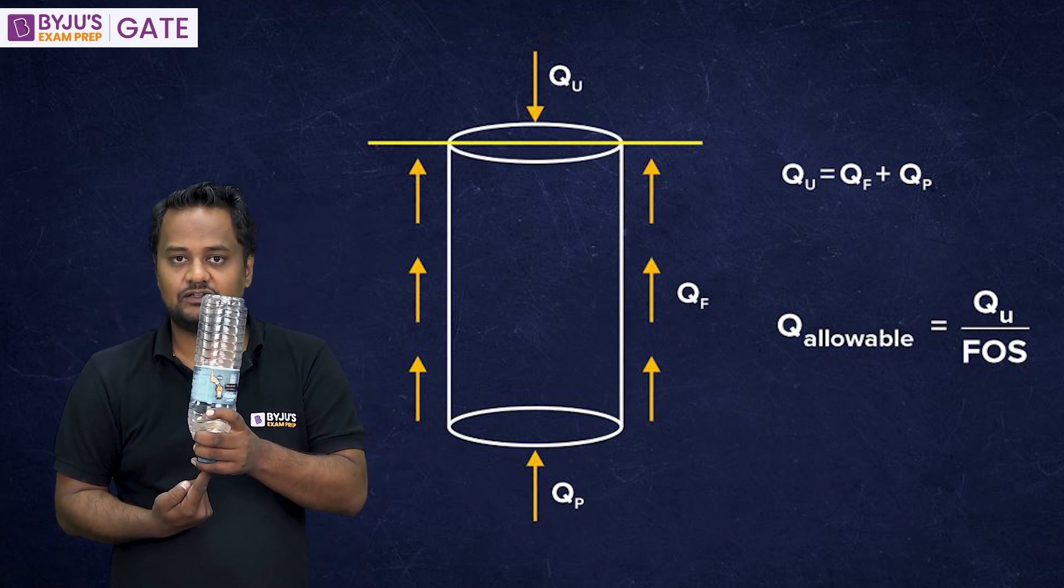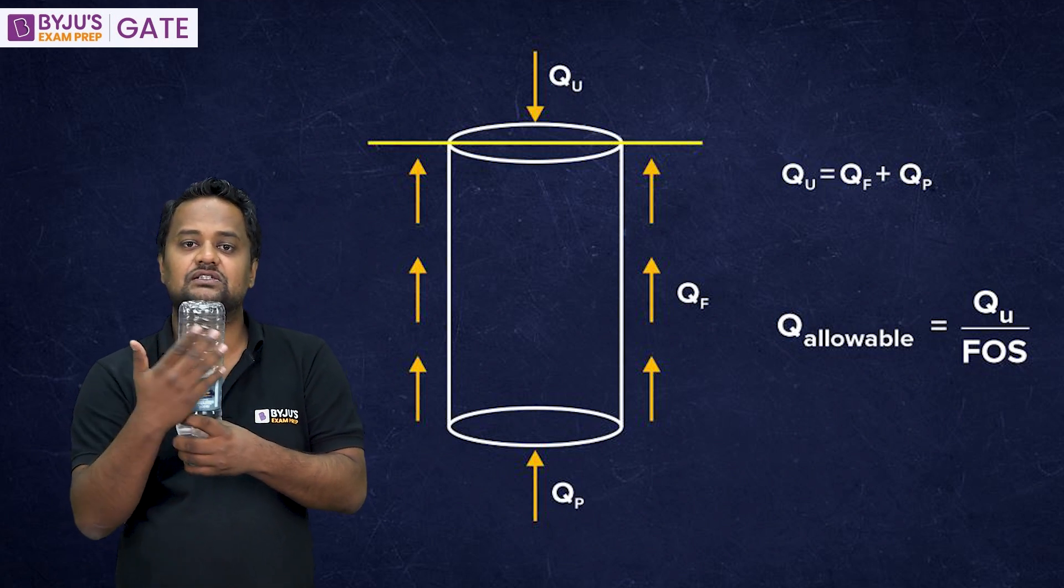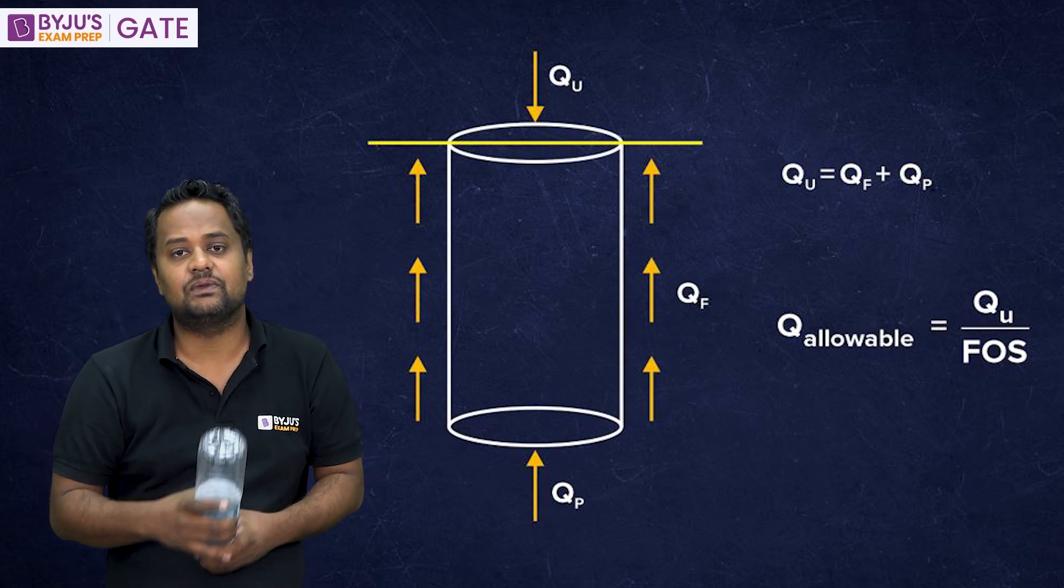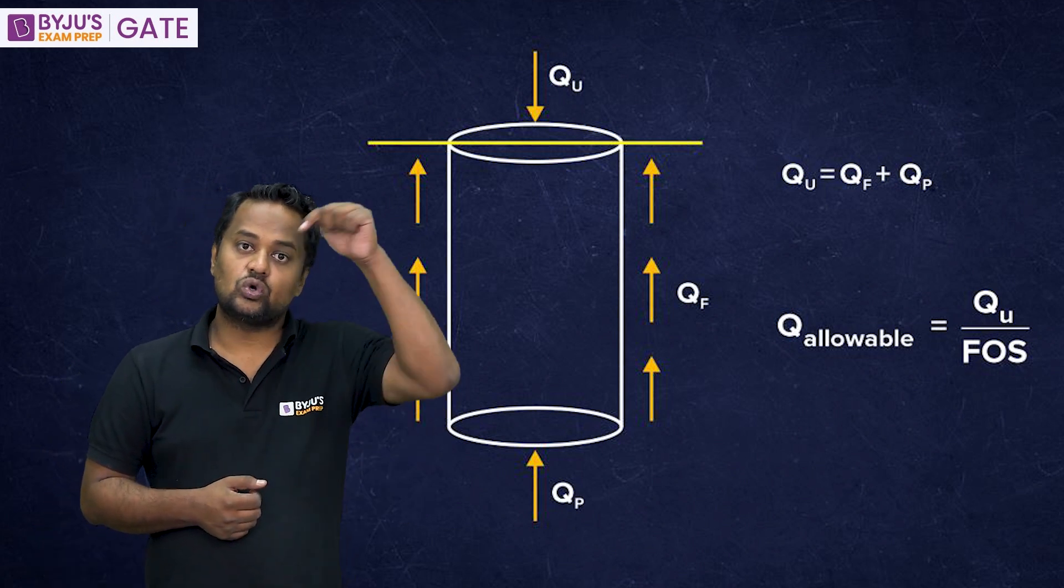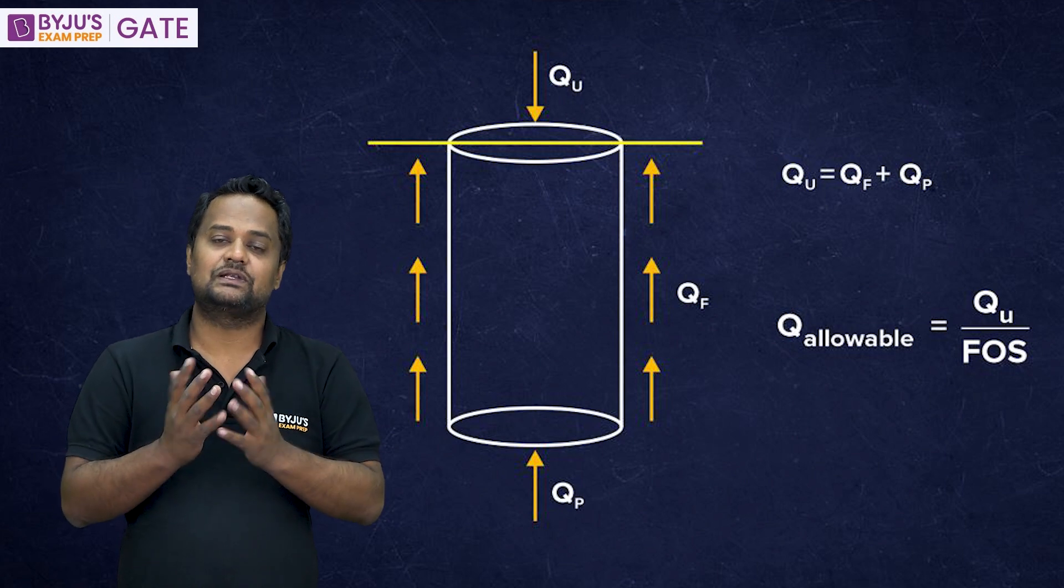The base might be at the firm surface or the hard surface. So, QP and at the surface, it is QF. Surface, it may be circular pile surface, may be curved or it may be a cuboid one or rectangular cross section also. So, total ultimate capacity QU is QF plus QP.